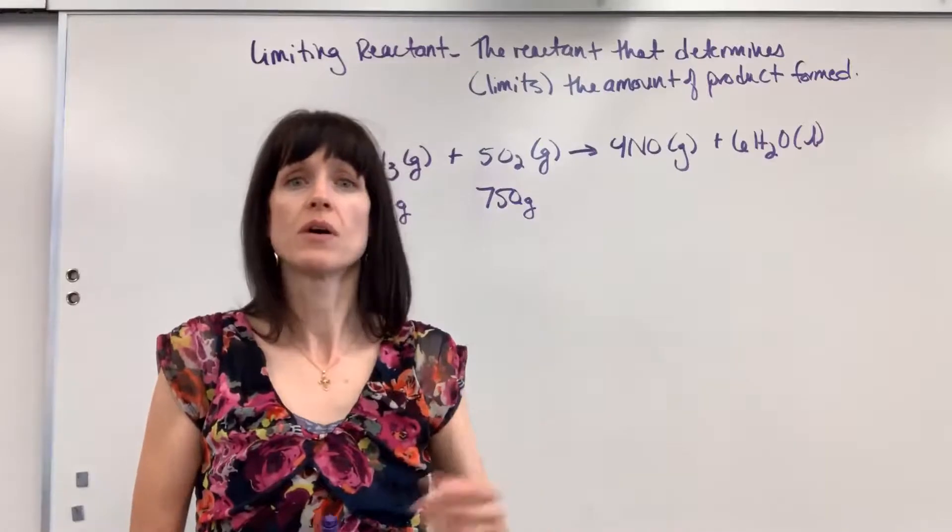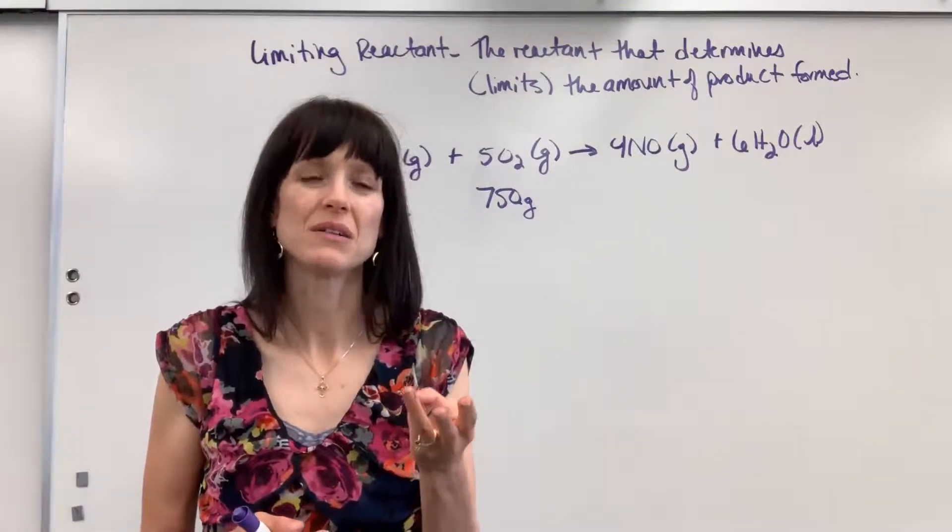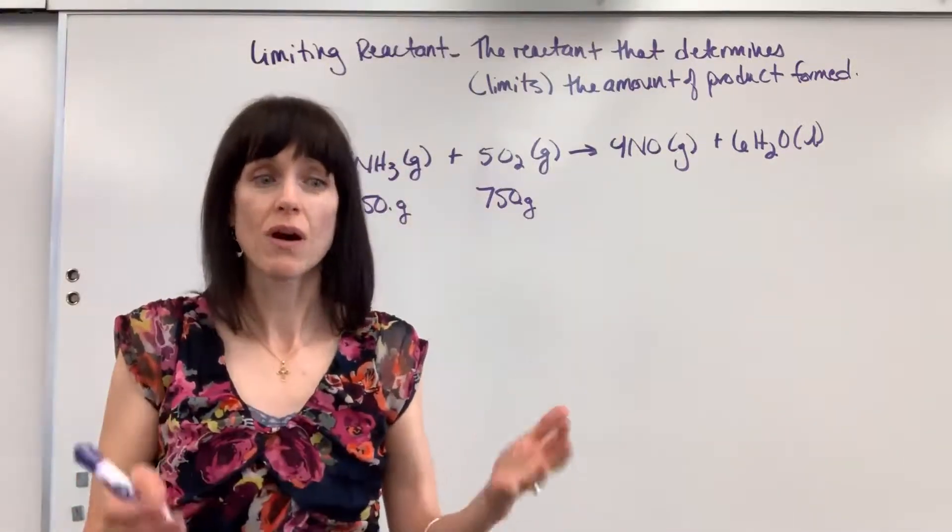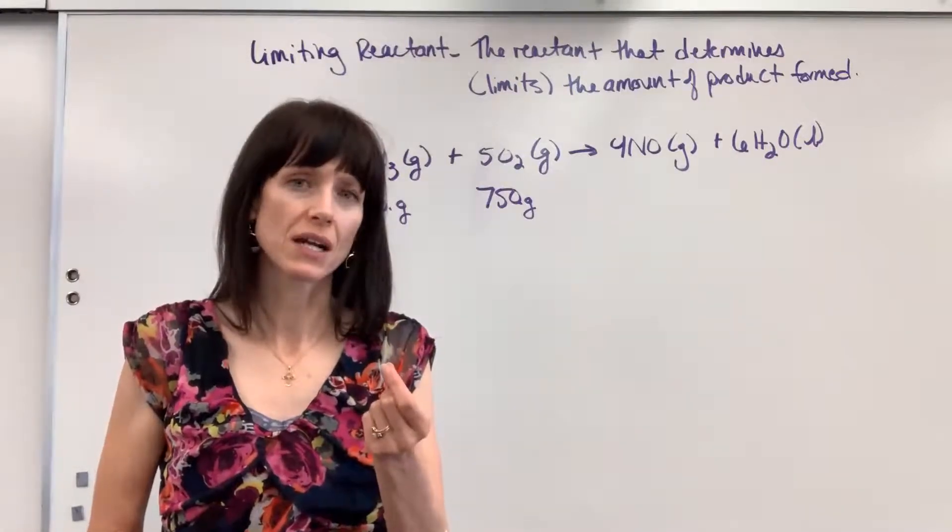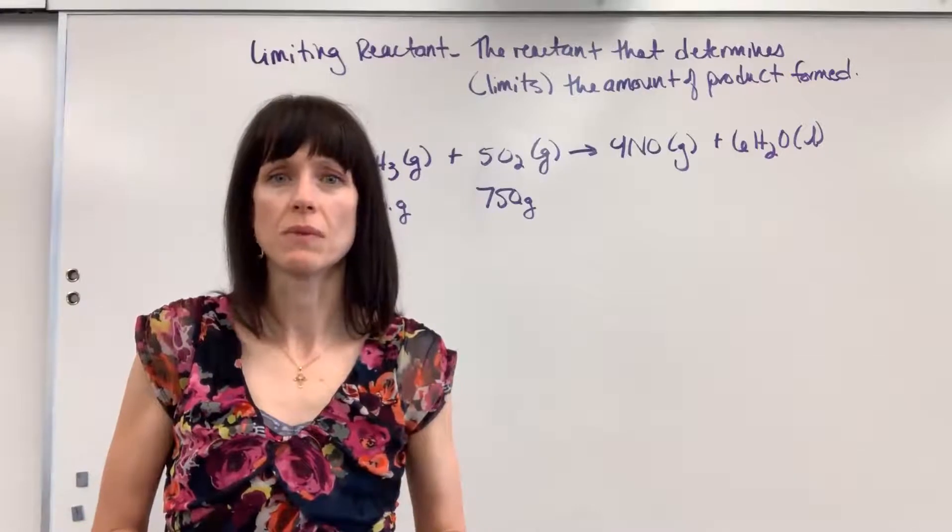but the eggs, you only have three eggs. You don't have four eggs. That means that you couldn't make two omelettes. You could only make one and a half omelettes. The limiting reactant there is, it's going to be the eggs. They determine how much can be made.